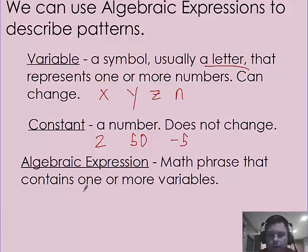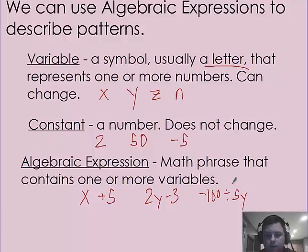So, an example for an algebraic expression would be x plus 5, or maybe 2y minus 3, or maybe negative 100 divided by 5y. It could be anything like this. These are all algebraic expressions. One key thing for expressions is they have no equal sign. If you see an equal sign, that's going to be an equation.